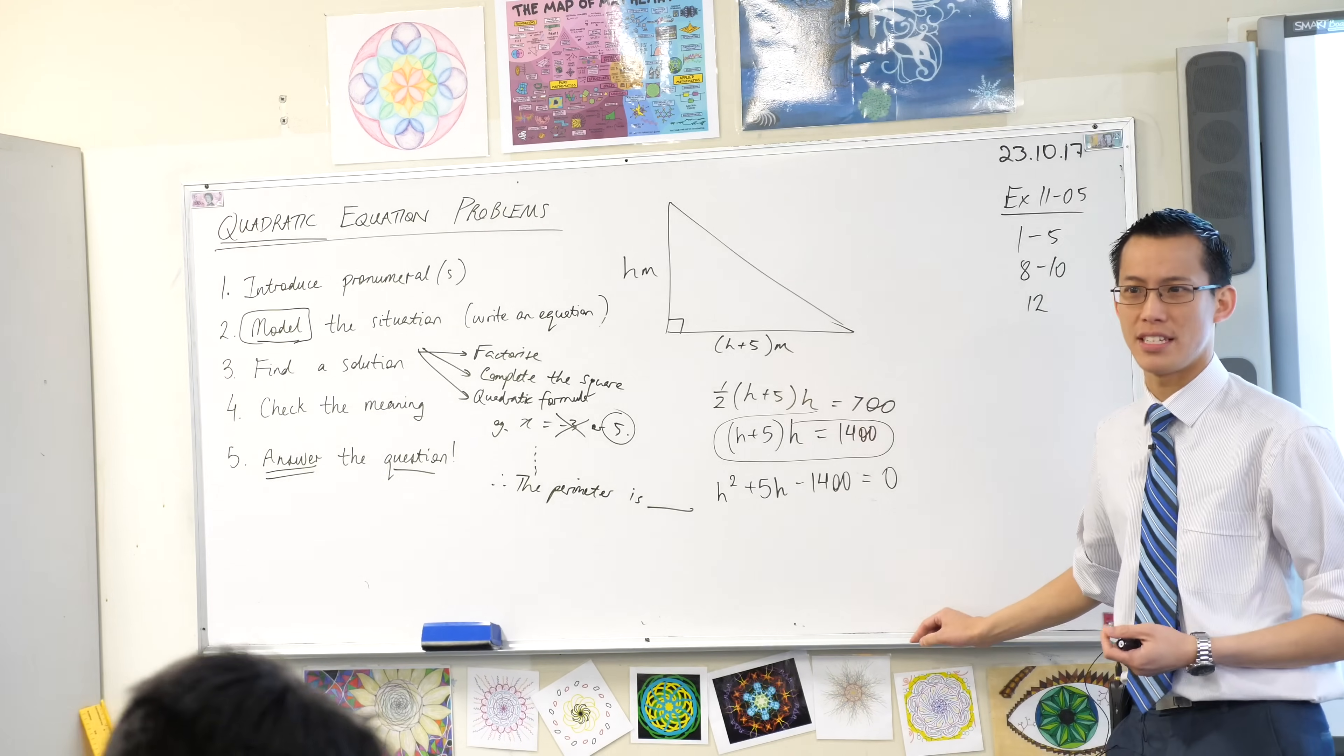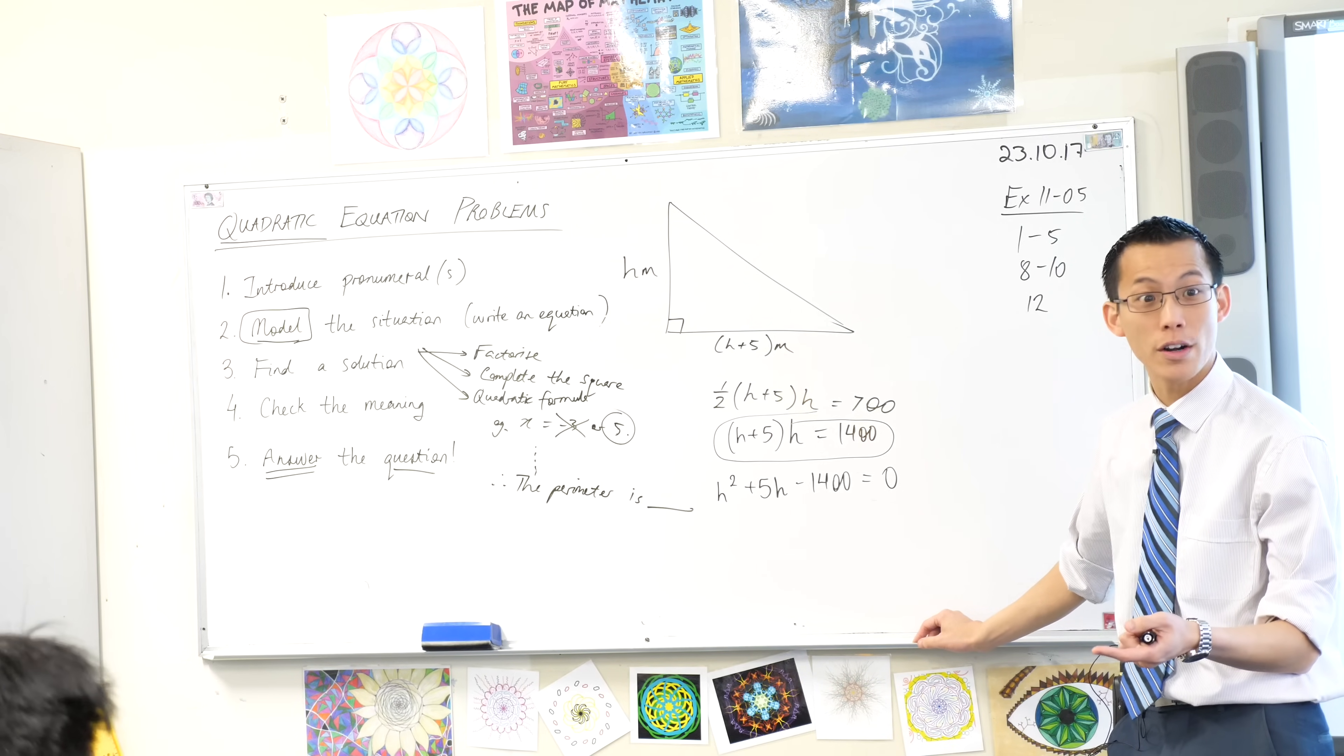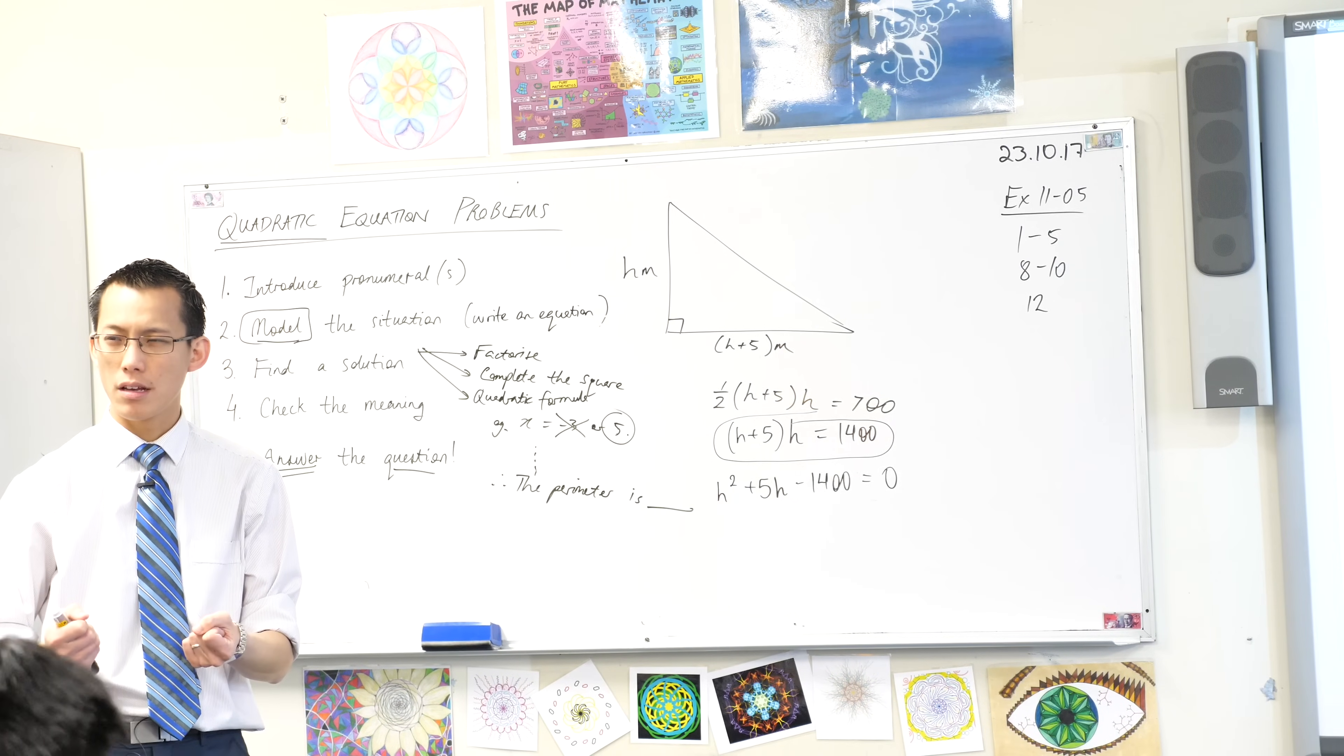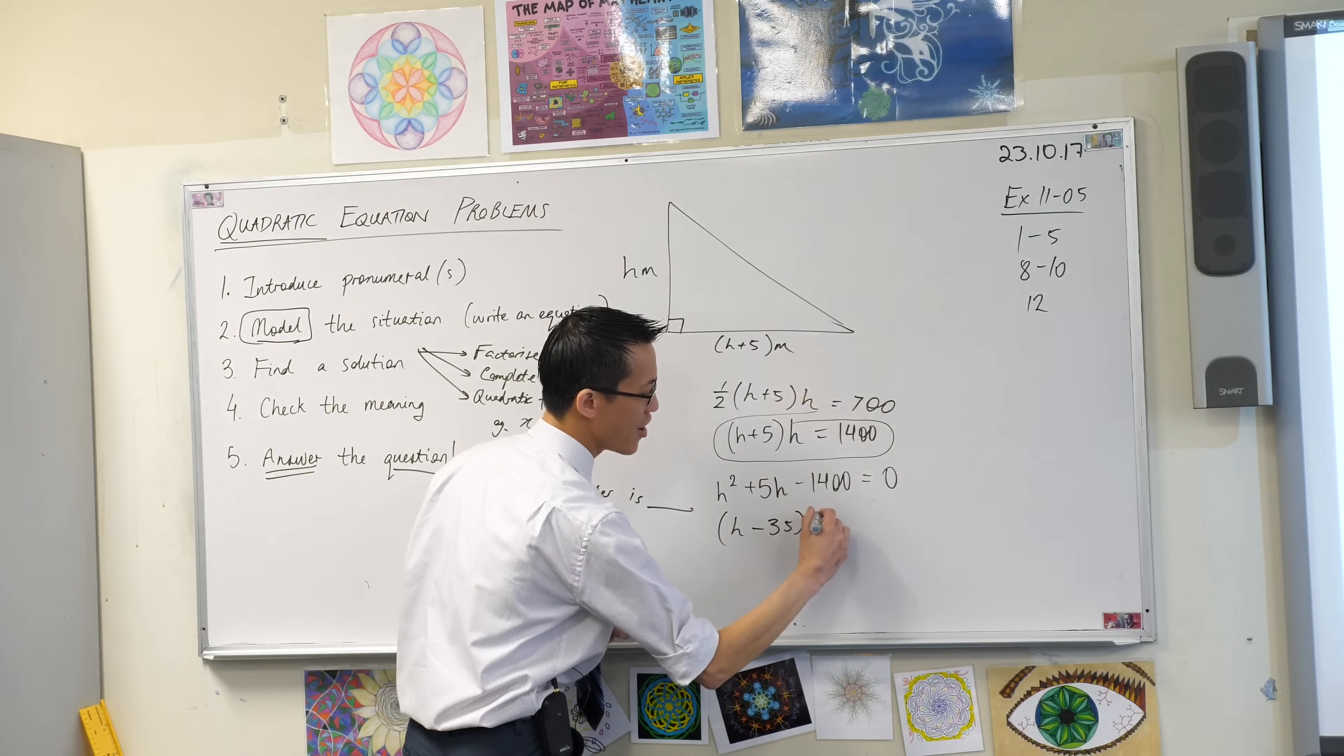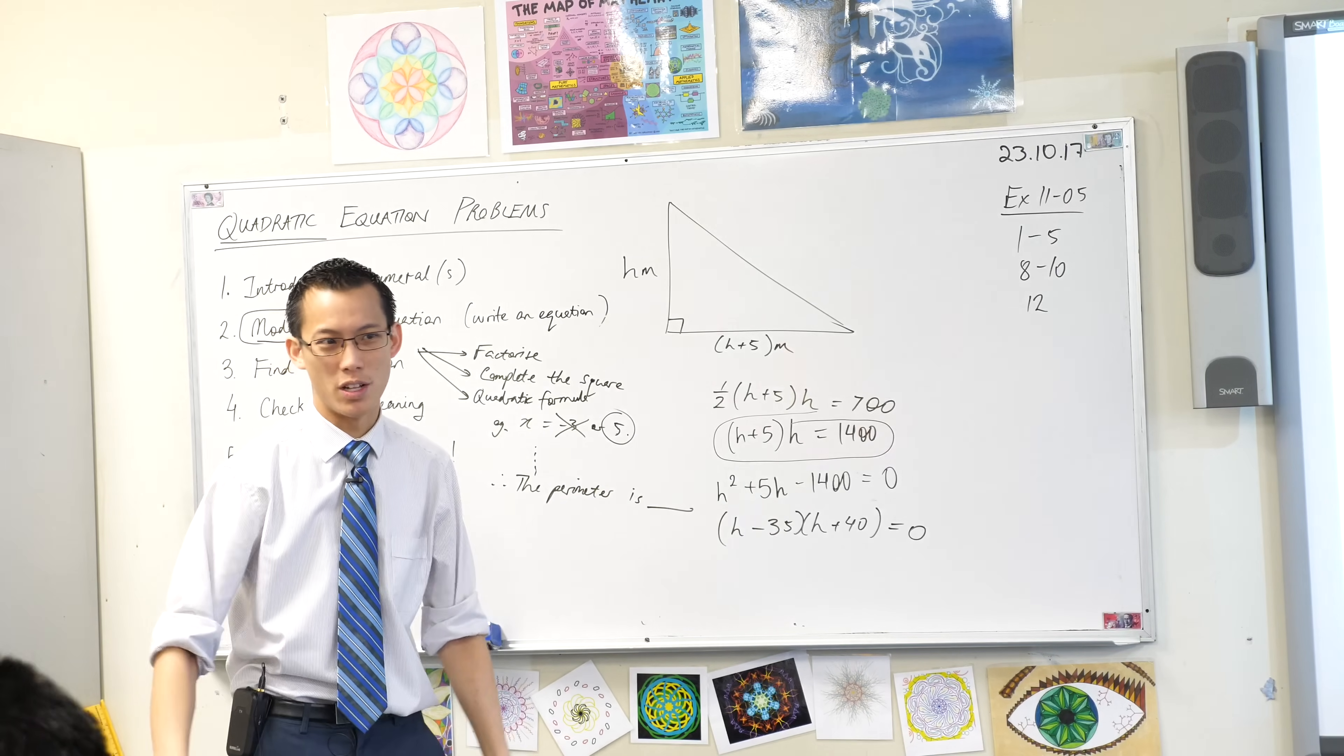1400 divided by 20 is 70, right? 70? No. Yeah, it is 70. So that's no good. 28? 28 and 50? 28 and 50? 40 and 35? 40 and 35? 40 and 35, are they far enough apart? 40 and 35 will do it. One of them is negative. Which one? 35 is the negative. How did I know that it was 35 that was negative? When I add them together, I need to get plus five, yeah? So the negative one must be smaller.